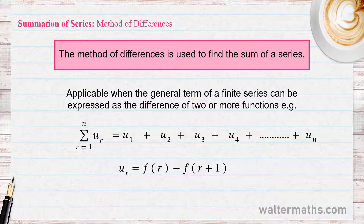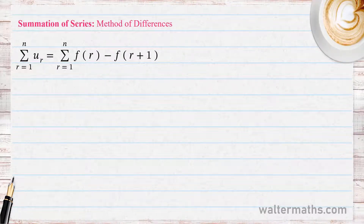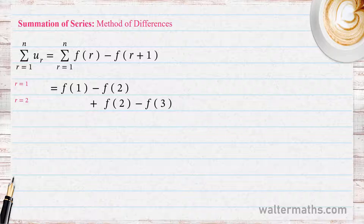We can say: let the summation from R equals 1 up to N of U sub R equal the summation from R equals 1 up to N of F(R) minus F(R+1). Writing down the terms of this series, starting with R equals 1, we get F(1) minus F(2). Then for R equals 2, we get F(2) minus F(3).